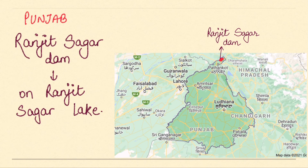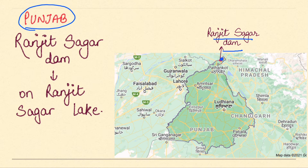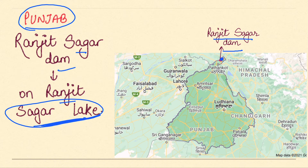Next state is Punjab. Punjab has one very important dam: Ranjit Sagar Dam. It is in the northernmost part of Punjab, near Dharamshala and also near Pathankot. Ranjit Sagar Lake is present there. If it is important I will cover it in the next video.